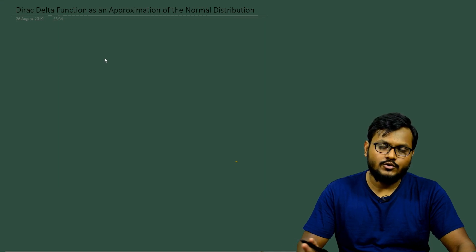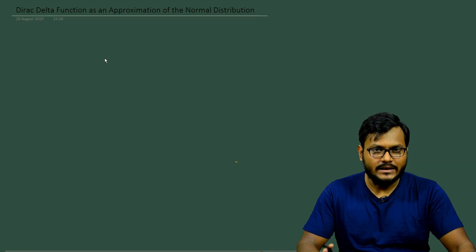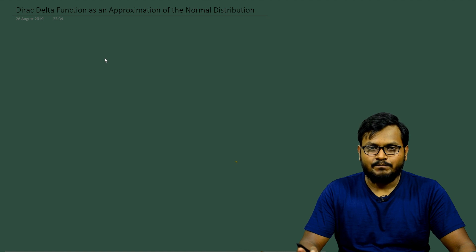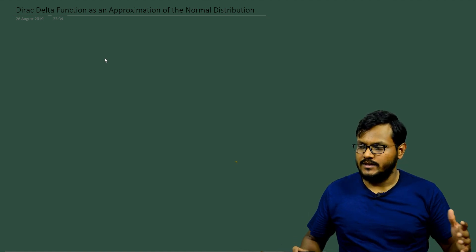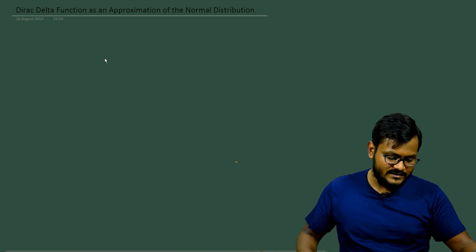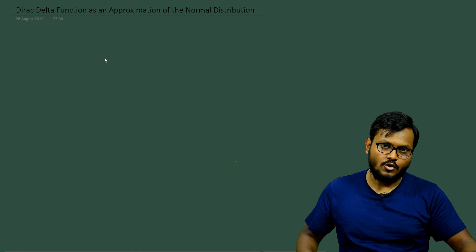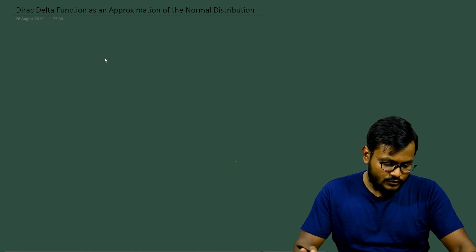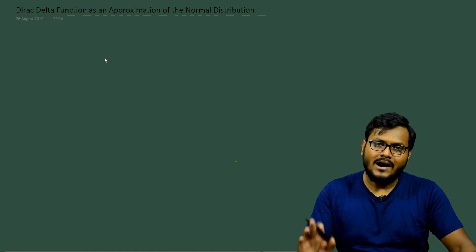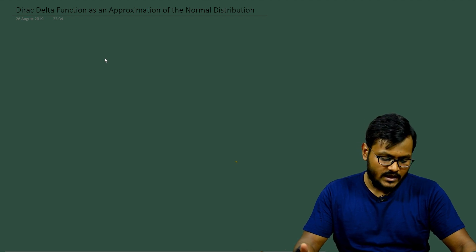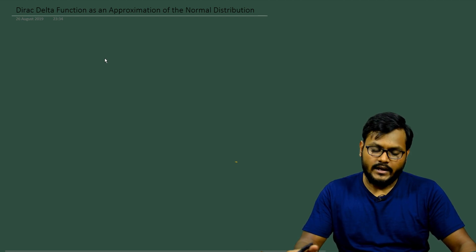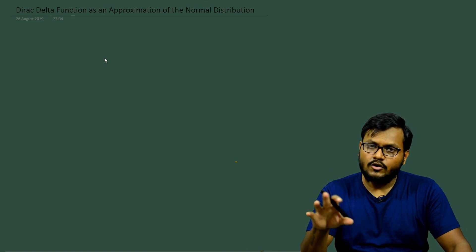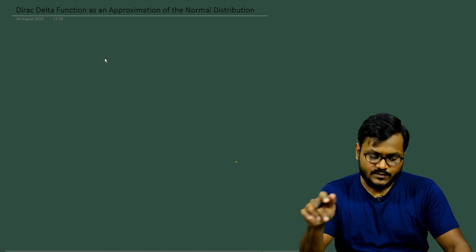In today's video I want to talk about something completely random but quite interesting. I have this new setup that I'm experimenting with, and I wanted to find something interesting to talk about. So today I want to show how the Dirac delta function can be approximated by a normal distribution. I'm going to talk about what a normal distribution is, but first let me define what a Dirac delta function is.